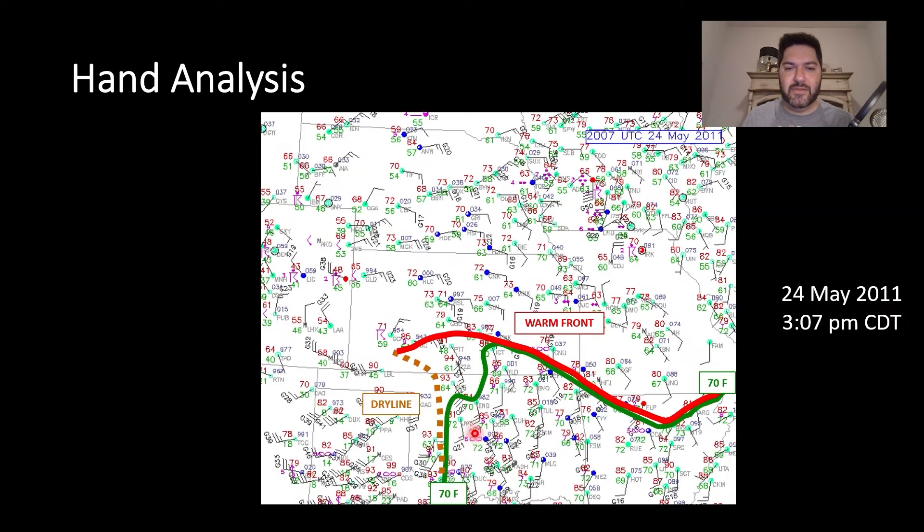And then the warm front. This is somewhat subjectively annotated here, but basically it shows the difference between relatively warm temperatures to the south and relatively cool temperatures to the north. You'll see that it's a little bit fuzzy where that is. It just generally shows about 80 degrees as the location of the warm front.